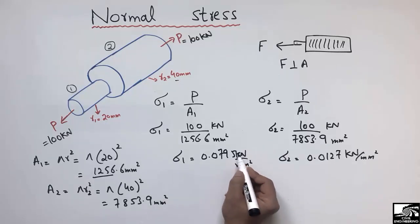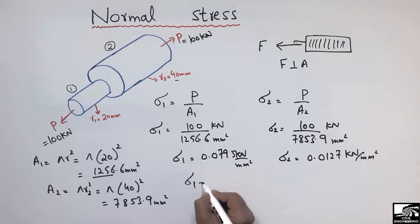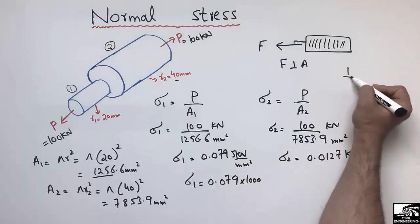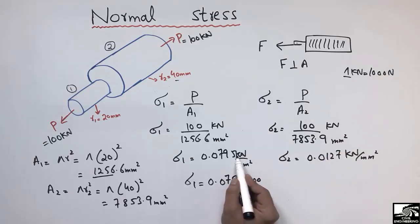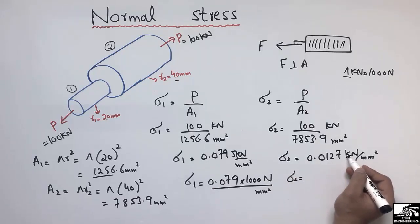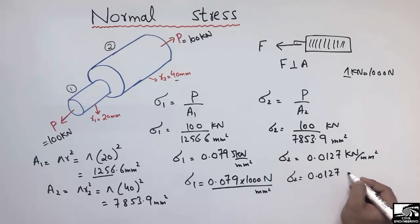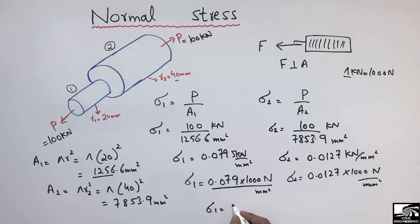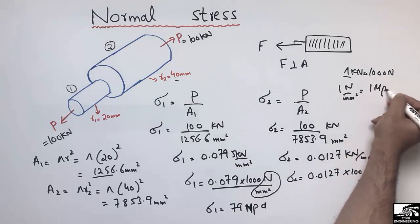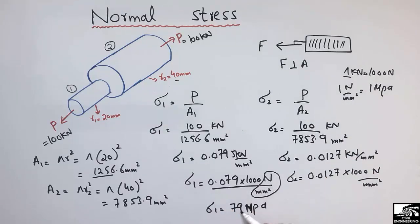To convert to megapascals — the most commonly used unit of stress — we multiply by 1000, since 1 kN = 1000 N. This converts kN/mm² to N/mm². Since 1 N/mm² equals 1 MPa, σ1 = 79 MPa and σ2 = 12.7 MPa.